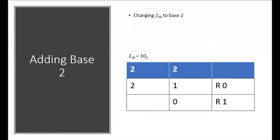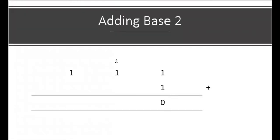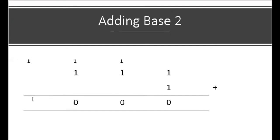We do this by dividing two by the base: 2 into 2 goes one time remainder zero, and 2 into 1 you can't, remainder 1. So changing 2 base 10 to base 2 gives us 1 0. Therefore in our calculation it becomes 0 carry 1. Then we have 1 plus 1 again, which is 0 carry 1, and again 1 plus 1 is 0 carry 1. This last 1 has nothing to add with, so we place it back. Our answer for 111 plus 1 is 1000 in base 2.